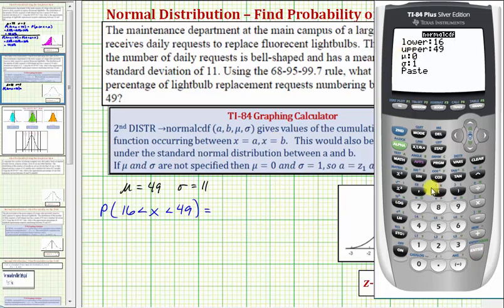Mu is the mean, which we know is forty-nine, enter. Sigma is eleven, so eleven, enter. And on paste, we press enter.